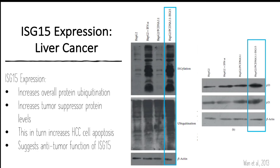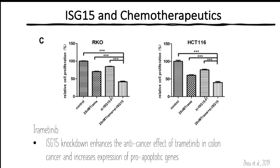A study examining trimetinib, which is a MEK inhibitor chemotherapeutic, found that ISG15 knockdown enhances the anti-cancer effect of the drug in colon cancer and increases expression of pro-apoptotic genes. This further supports a pro-tumor function of ISG15.